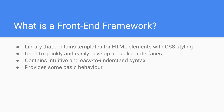A front-end framework is simply a library that contains templates for HTML elements with CSS styling. So that means, let's say we were to select a button — we don't just get that boring, unformatted HTML button. The button that we select with a front-end framework like Semantic UI will automatically have a bunch of styling already applied to it. This way the items we choose already look really good before we personally do anything to add any CSS.